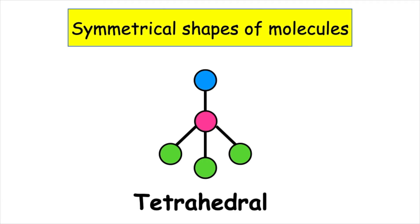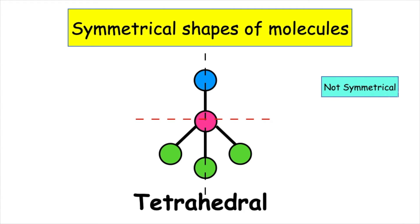So what happens when we change the combination of atoms around the central atom? We can see that there is now not a line of symmetry because the atoms around the central atom are different, and therefore it would be not symmetrical.